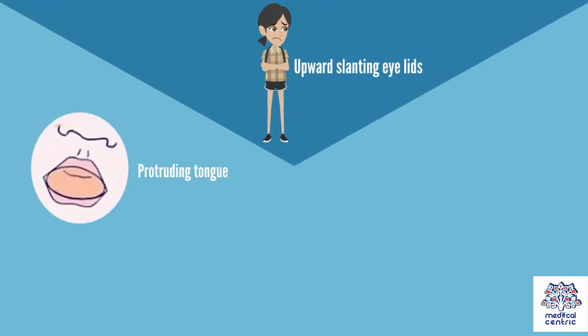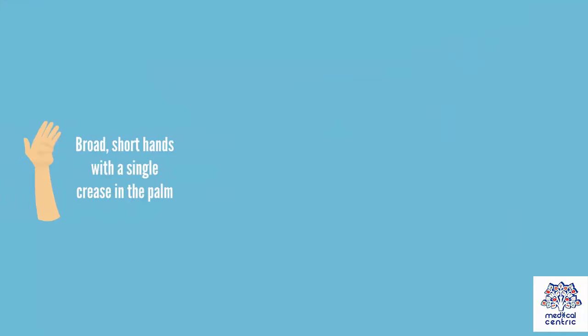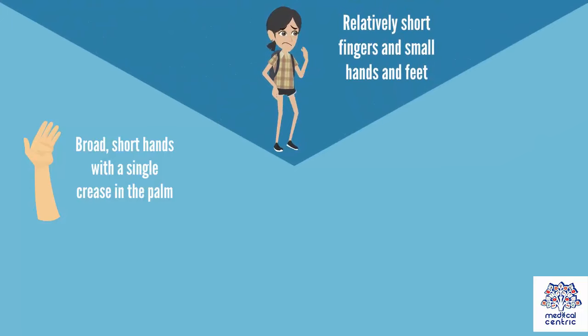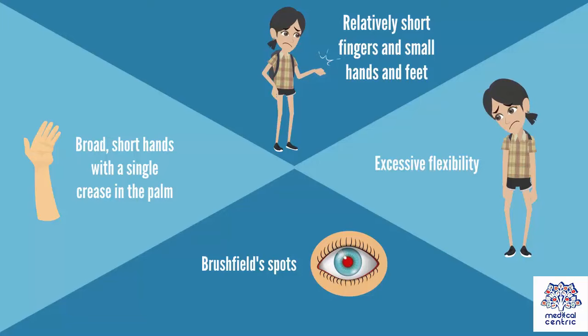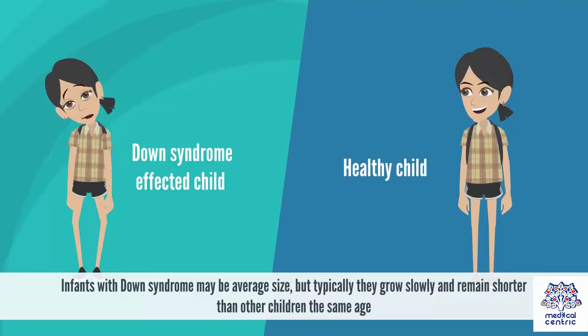Additional physical features include unusually shaped or small ears, poor muscle tone, broad short hands with a single crease in the palm, relatively short fingers and small hands and feet, excessive flexibility, and tiny white spots on the iris of the eye called Brushfield spots. Infants with Down syndrome may be average size at birth, but typically grow slowly and remain shorter than other children the same age.